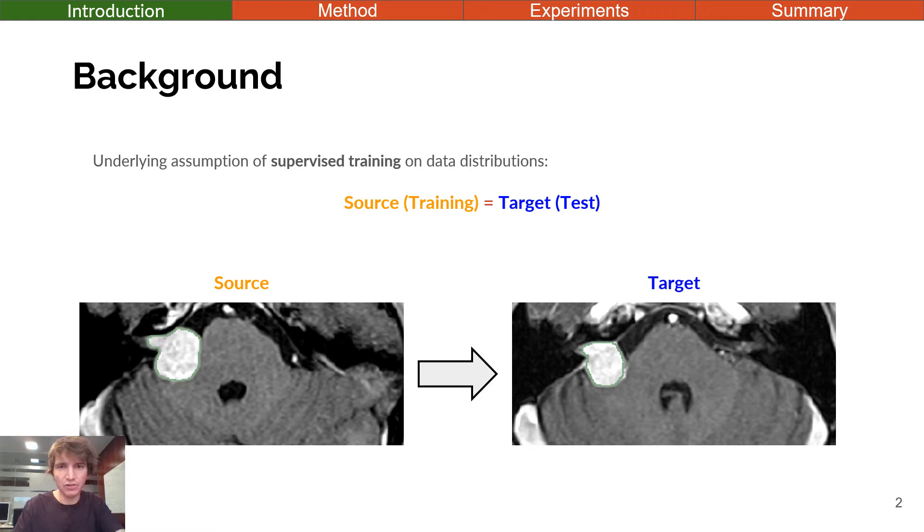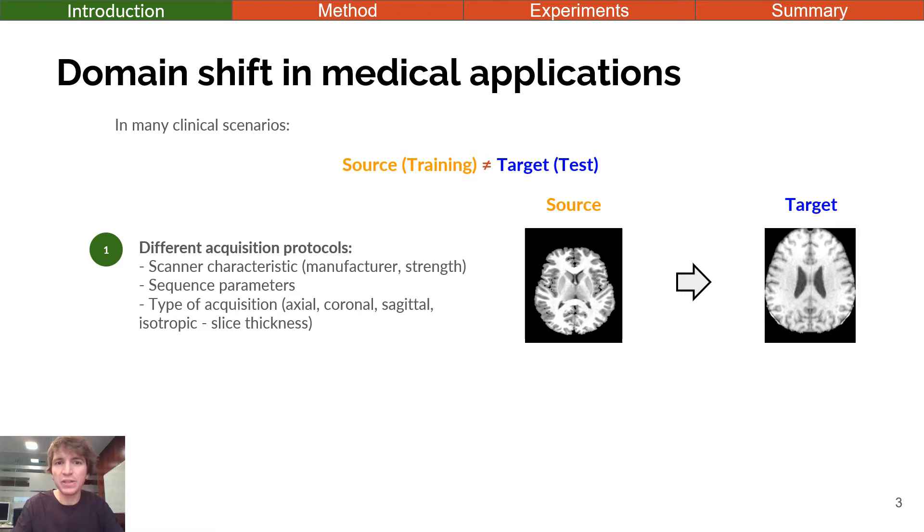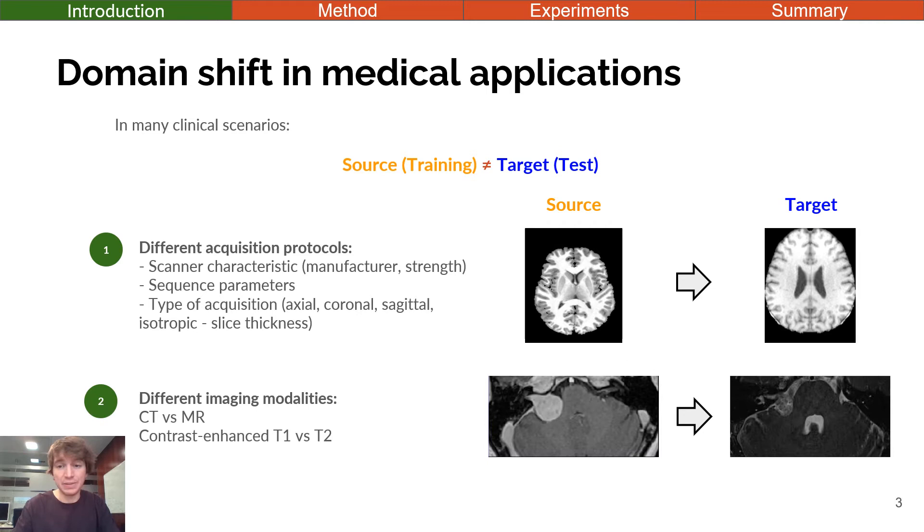Traditional supervised learning approaches assume that the testing data from the target domain and the training data from the source domain are drawn from the same data distribution. However, in practice this assumption doesn't always hold. For example, the training and testing data may have been acquired with different acquisition protocols, leading to differences in resolution and visual appearance among these databases. Similarly, the two datasets may have been acquired with different clinical workflows, leading to the acquisition of different imaging modalities.